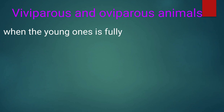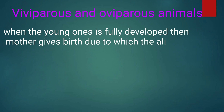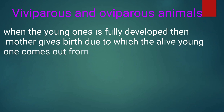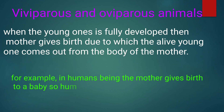When the young one is fully developed, the mother gives birth, and the alive young one comes out from the body of the mother. For example, in human beings, the mother gives birth to the baby, so humans are viviparous animals.